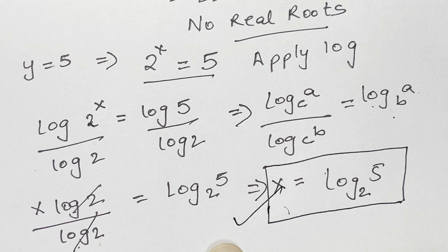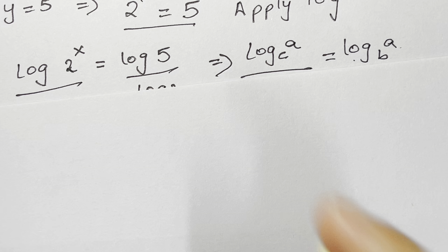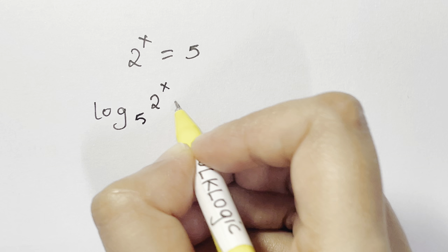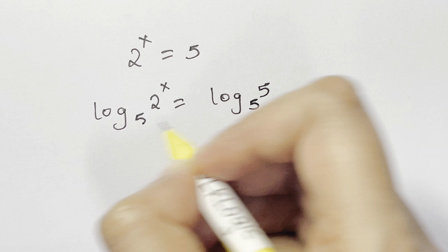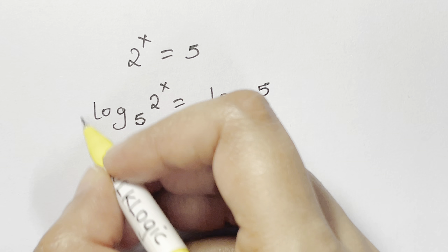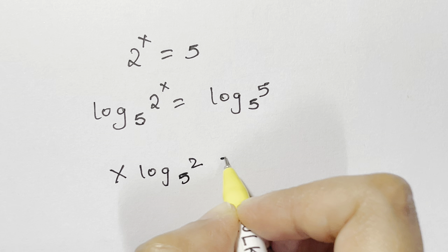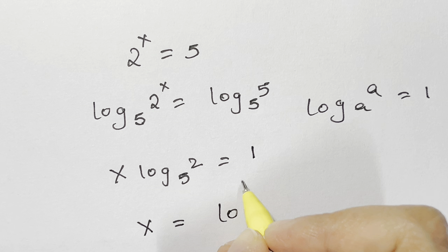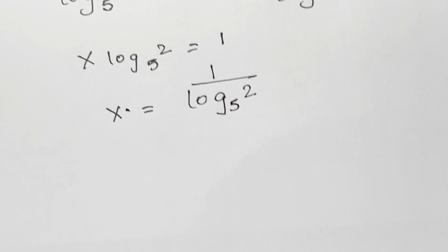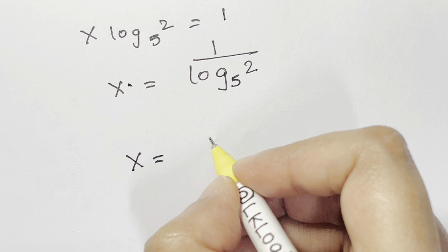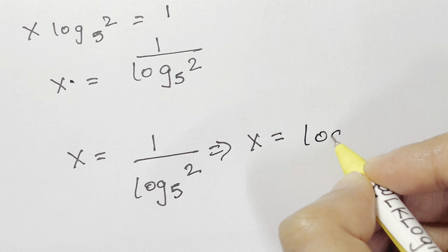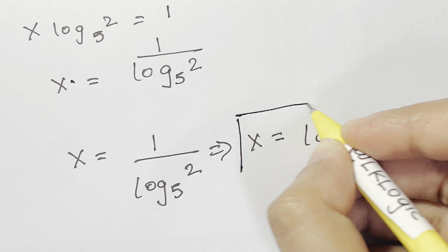Let me show another method. Starting from 2 to the power of x equals 5, take log base 5 on both sides: log base 5 of (2^x) equals log base 5 of 5. This gives x times log base 5 of 2 equals 1, since log a base a equals 1. So x equals 1 over log base 5 of 2, which by the reciprocal rule equals log 5 to the base 2 — the same answer as before.